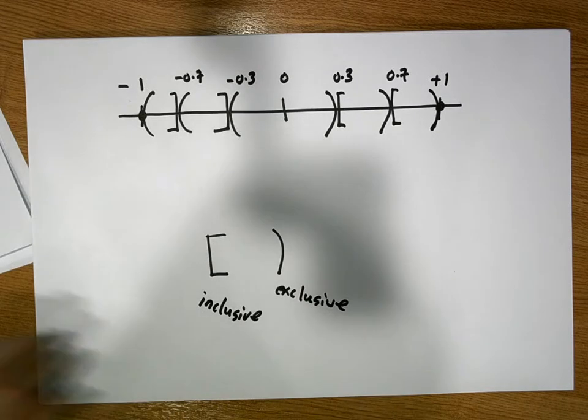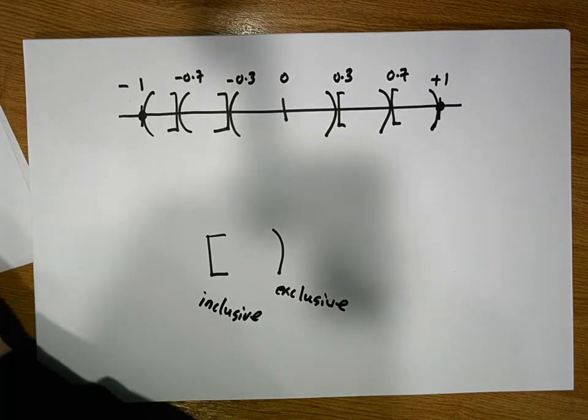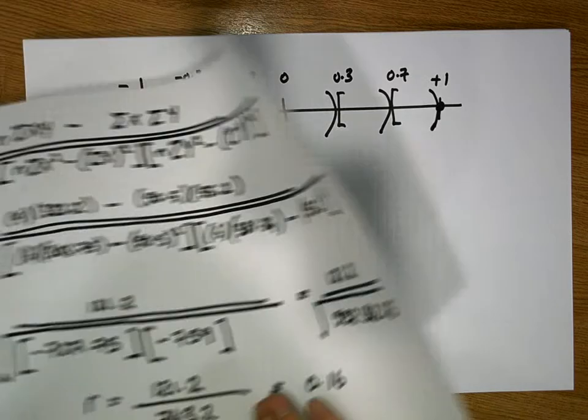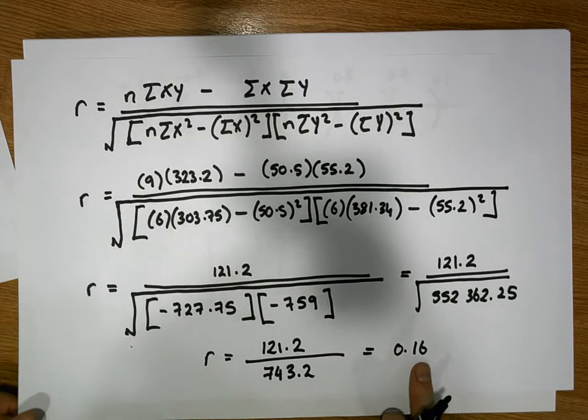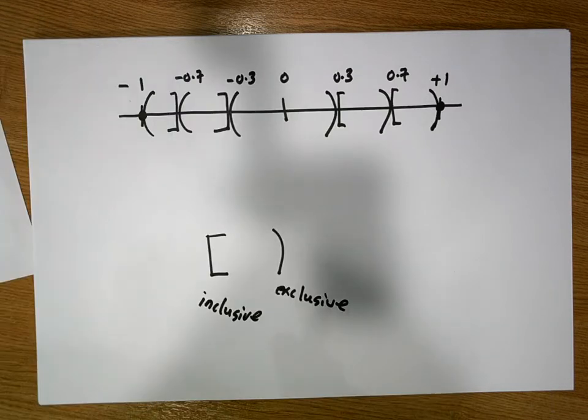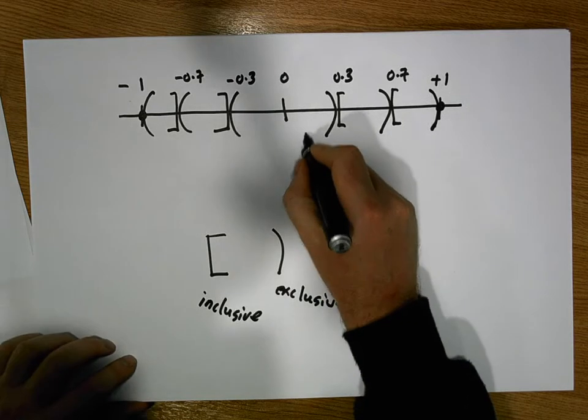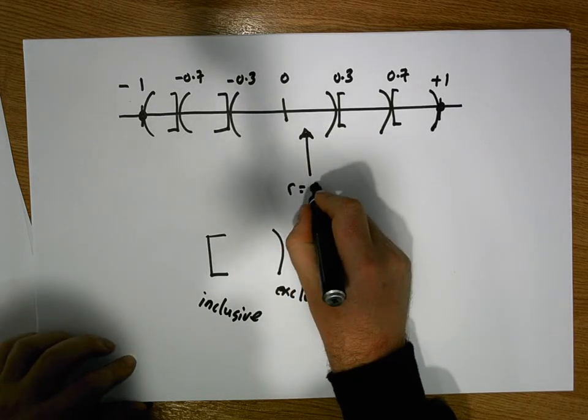Now, for our calculation, the correlation coefficient R came out to be 0.16. 0.16 lies in this particular interval here. R equals 0.16.